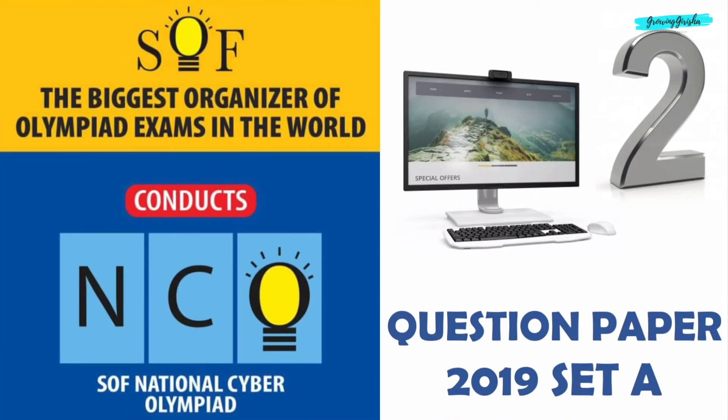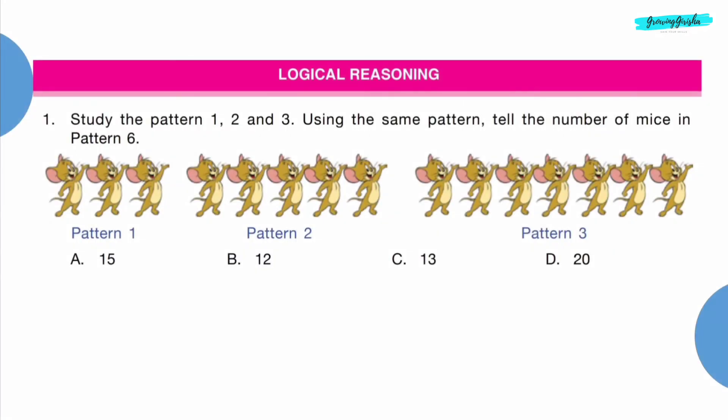National Cyber Olympiad for Class 2 question paper 2019, Set A. The best way to practice is to pause the video after every question and select your answer. Logical reasoning question 1: Study the pattern 1, 2, and 3. Using the same pattern, tell the number of mice in pattern 6.